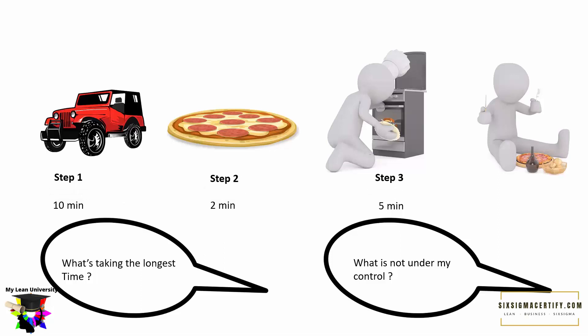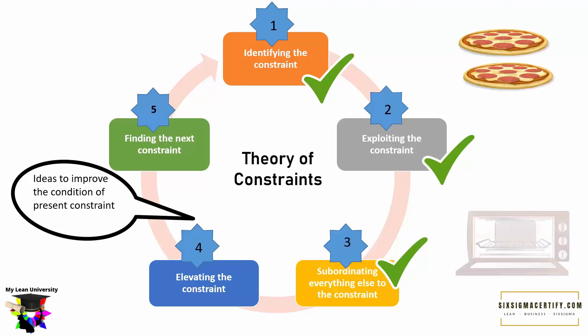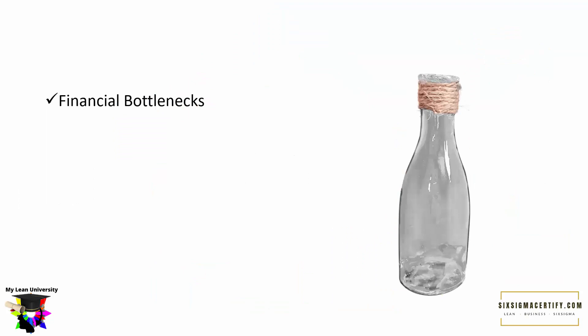When identifying constraints, we look at two things: what is taking the longest time, and what is not under our control. In this example, we might find that the pizza baking machine needs to be changed, or we could buy a new oven, or bake two pizzas at a time so we get two pizzas at the end of the process, decreasing cost and manufacturing time. We can also make changes to the pizza machine if possible, or buy a new one.